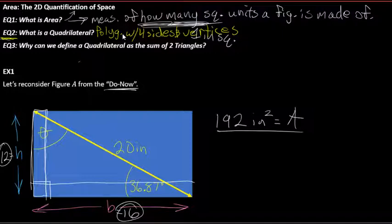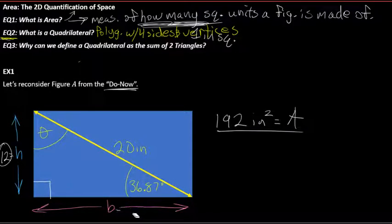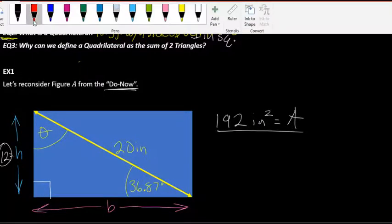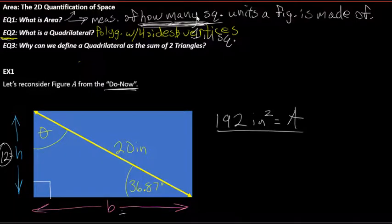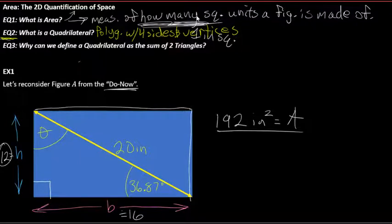EQ3: why can we define a quadrilateral as a sum of two triangles? Looking at this picture, if you think about it, two triangles are forming this quadrilateral — this rectangle. Obviously this is a rectangle, and we'll talk about why in a little bit. So this rectangle is made of two triangles.